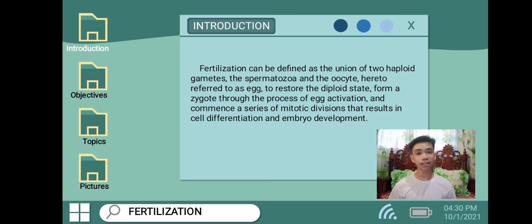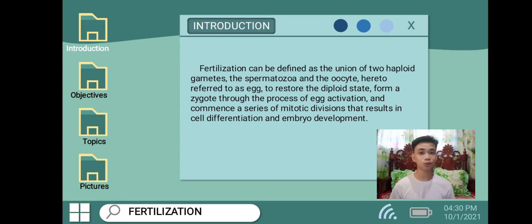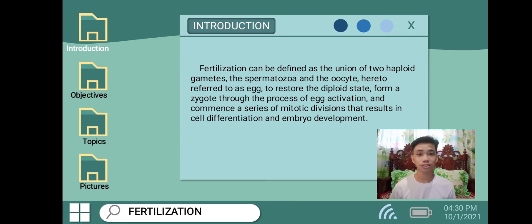Fertilization can be defined as the union of two haploid gametes. When we say haploid, it is half of the number of chromosomes, or just 23 chromosomes. So when the two gametes unite during fertilization, it will create a total number of 46 chromosomes, now called diploid.